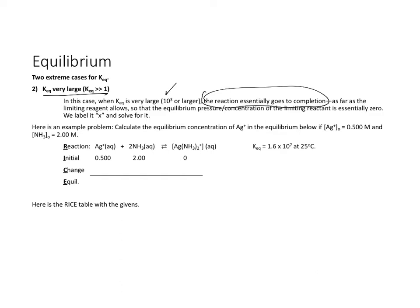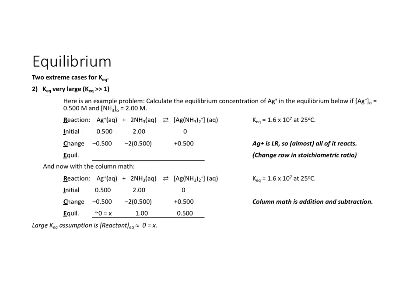Here's an example problem. Let's calculate the equilibrium concentration of free silver Ag+ if the initial concentration of silver is 0.5 and the initial concentration of our other reactant, ammonia, is 2. Now, notice the equilibrium constant, 1.6 times 10 to the 7th, or if you prefer, 16 million. That is a huge equilibrium constant. That means we should get almost all product and very little reactant left. So here's our RICE table with the givens, and now let's calculate the change.